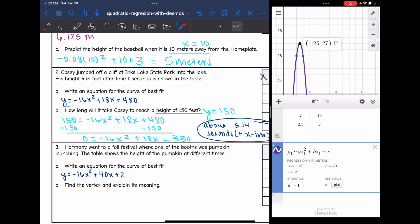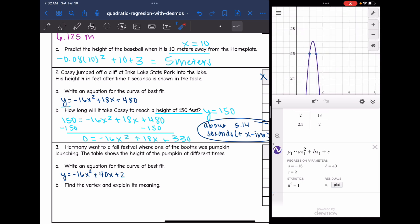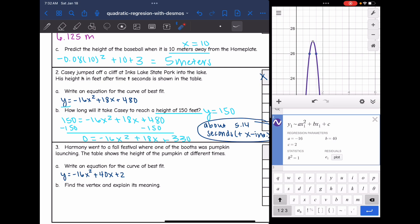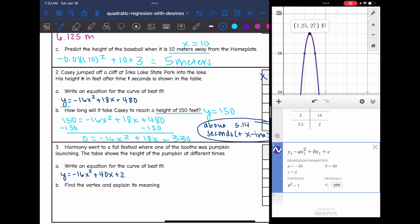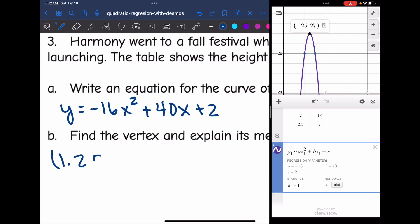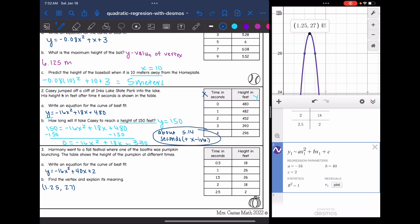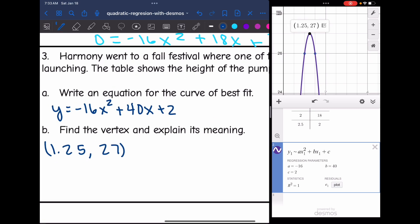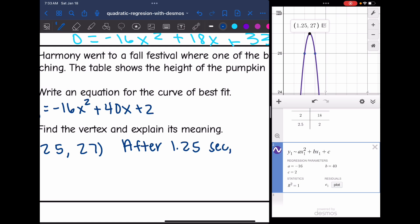Next question says find the vertex and explain its meaning. So I went ahead and zoomed in on the vertex on my graph. Desmos already graphed this regression equation for us. I didn't have to graph anything differently. I just zoomed in to where the vertex is and my vertex is 1.25 comma 27. So remember my x values was the time in seconds and the y values was my height in feet. So the vertex is a maximum here. So that means that after 1.25 seconds the pumpkin reached its max height of 27 feet.